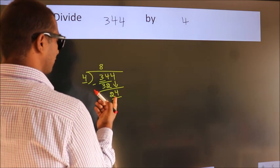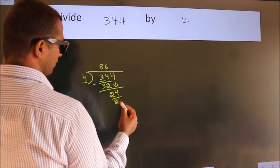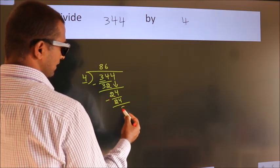When do we get 24 in the 4 table? 4 times 6 equals 24. Now we subtract. We get 0.